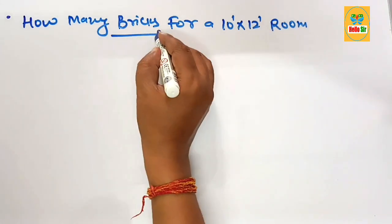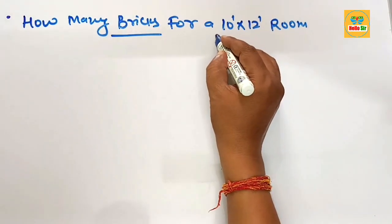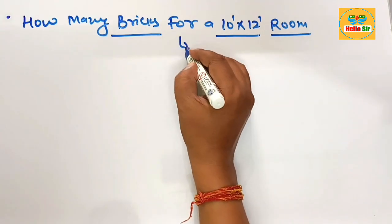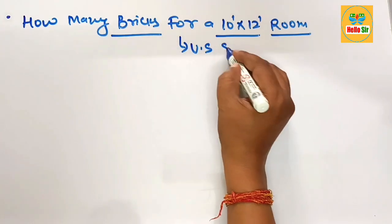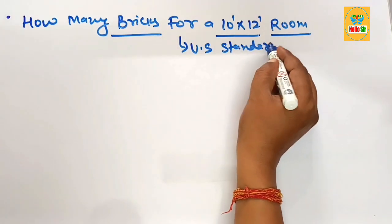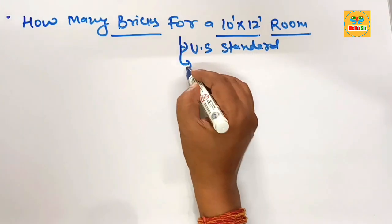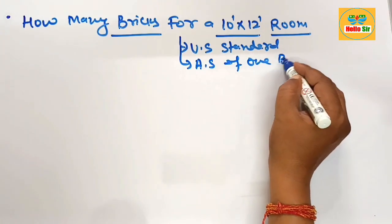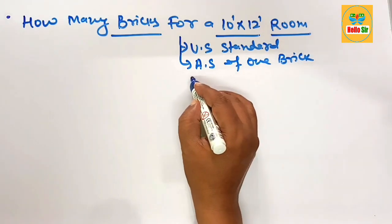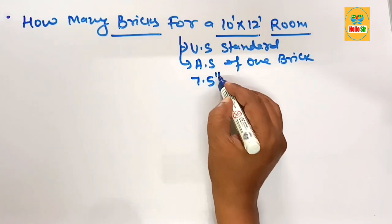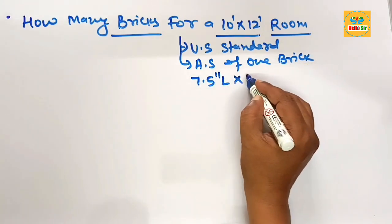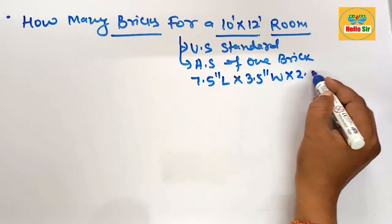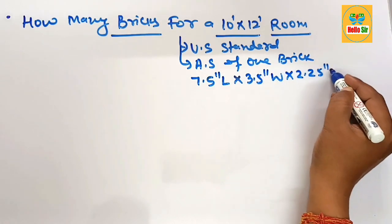You have to figure out the number of bricks required for a 10 by 12 foot room. As per US standard, the actual size of one brick is about 7.5 inches long, 3.5 inches wide, and 2.25 inches high.